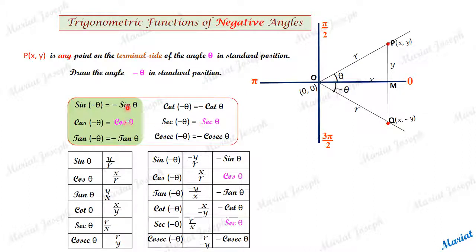Remember only the first two or three. Only cos minus theta equals cos theta, and its reciprocal sec minus theta equals sec theta. Rest all are influenced by the negative sign of the angle.